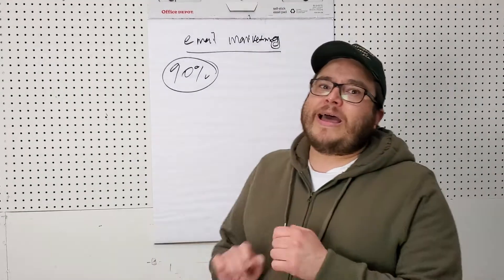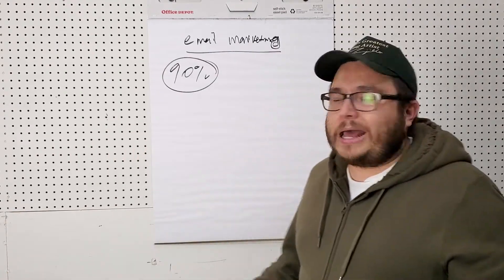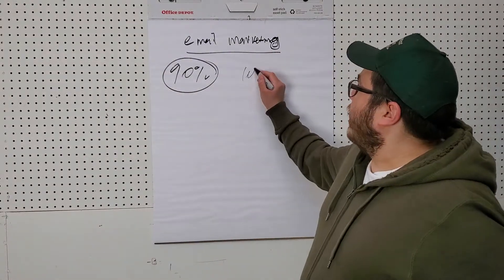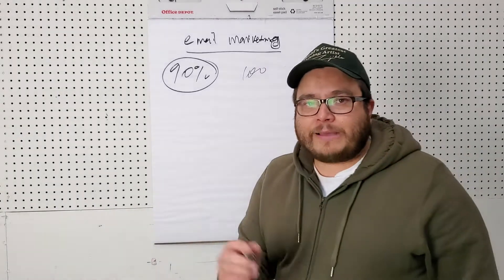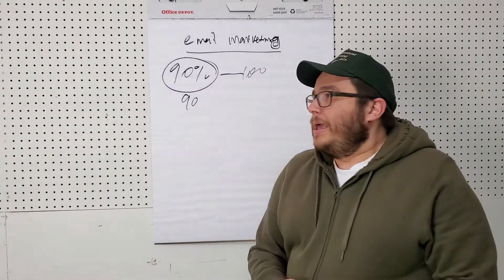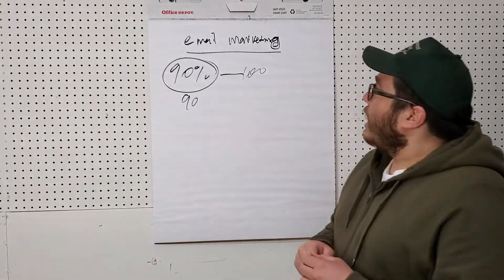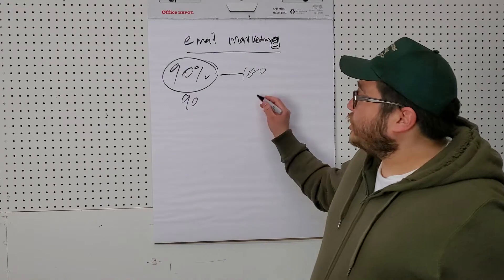What this means is that every time you send out an email to your email list, let's say you had a hundred people, 90 people would open it. I don't know if 90 people would read it, but 90 would definitely click on it and open it. It has changed, it has dropped significantly.